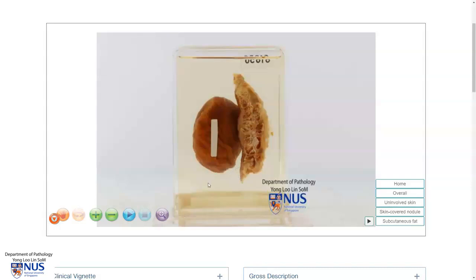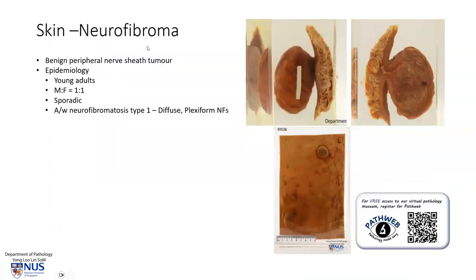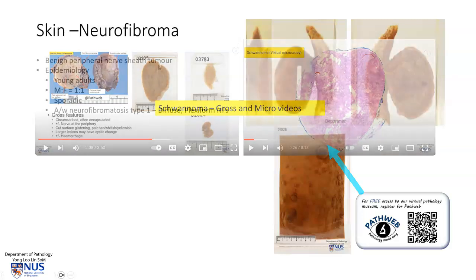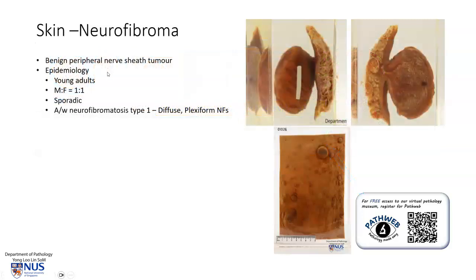The neurofibroma is a benign peripheral nerve sheath tumour, with the other well-known benign peripheral nerve sheath tumour being the schwannoma — there is a separate video describing the schwannoma. In terms of epidemiology, neurofibroma occurs in young adults with an equal gender distribution. It can occur in the sporadic setting, but also in the background of neurofibromatosis type 1.